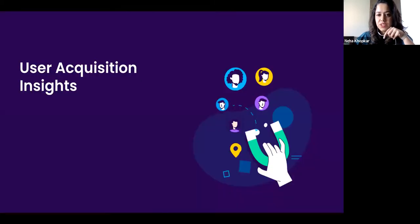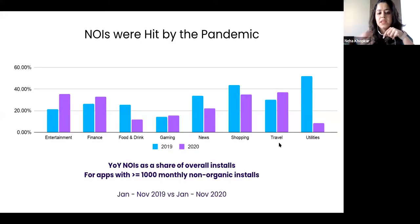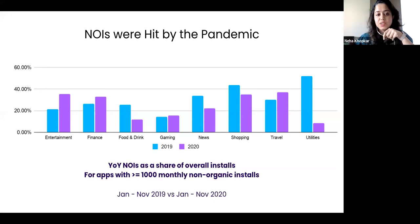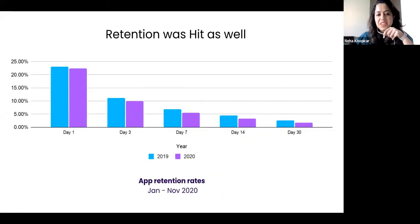Next, I'd like to share some user acquisition insights. Across the board, the pandemic has hit everybody, but we do see everybody recovering very strongly. Entertainment, fintech verticals, and gaming showed very strong prominence during this time. Retention rates — once you have spent a lot of time, effort, and resources acquiring users, retaining them becomes crucial. Unfortunately, retention rates have seen a drop of 12% compared to last year, and day-over-day retention rates are dropping further. This is something all app marketers need to keep in mind.